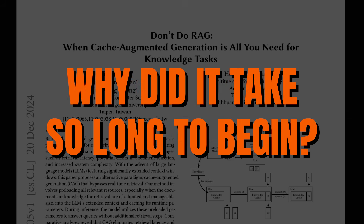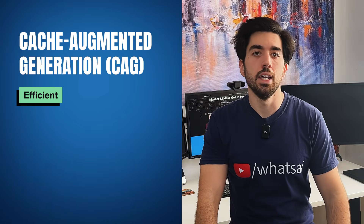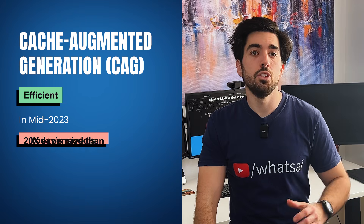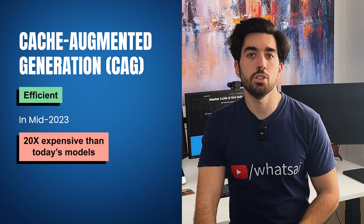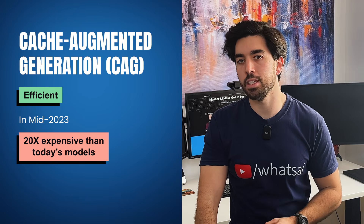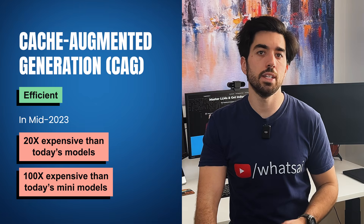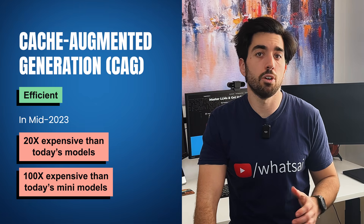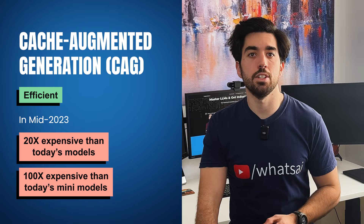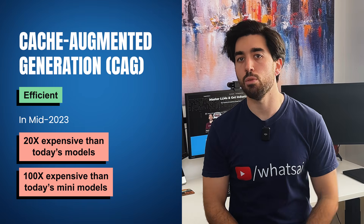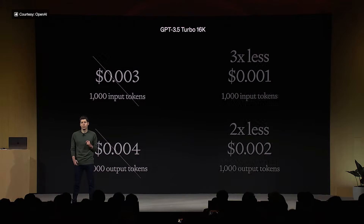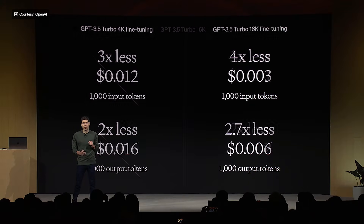Why did it take so long to begin? While CAG is efficient, it does come with costs. Back when GPT-4 first launched, using these large context models was up to 20 times more expensive compared to today's models, or even hundreds of times more expensive with current mini models like GPT-4o mini. These early challenges reinforced the dominance of RAG, but recent improvements in model efficiency and cost have made CAG a much more viable alternative.